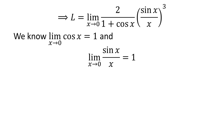We know the cosine function is continuous at 0, so at x is equal to 0, limit of cosine of x is equal to 1. Also, we know limit of sine of x upon x is equal to 1 as x approaches 0. The verification of this limit value is shown in the video appearing in the upper right corner, and the link is also given in the description. Applying these facts gives us L is equal to 1.